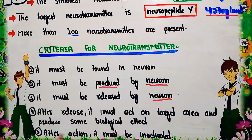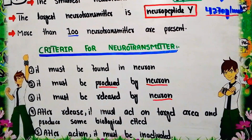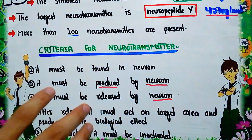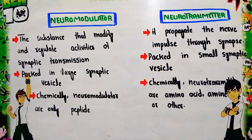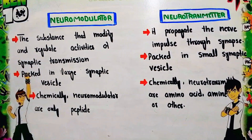The fifth criterion is that after performing its action, it must be inactivated. When the chemical messenger performs its action, it must subsequently be inactivated. A substance fulfilling all these criteria is considered a neurotransmitter.